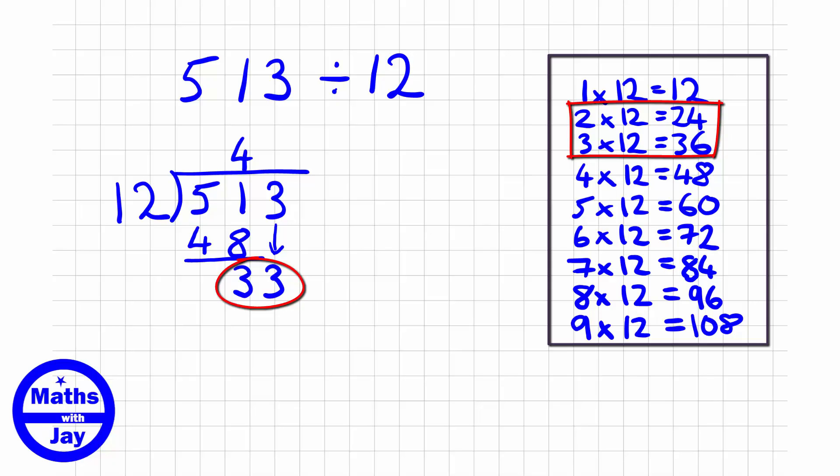So 2 goes above the 3. And then I multiply that 2 by the 12 and put the answer underneath the 33. So I get 24. And then as before I'll do a subtraction. So 33 minus 24 is going to be 9.